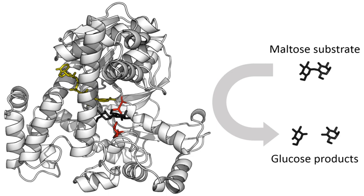By the late 17th and early 18th centuries, the digestion of meat by stomach secretions and the conversion of starch to sugars by plant extracts and saliva were known, but the mechanisms by which these occurred had not been identified. French chemist Anselm Payen was the first to discover an enzyme, diastase, in 1833.